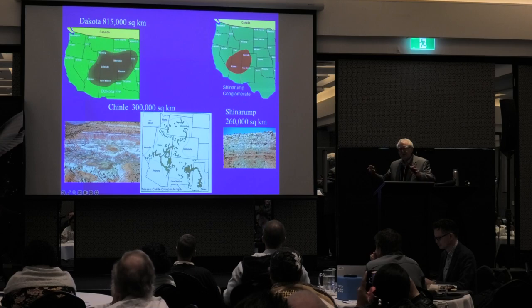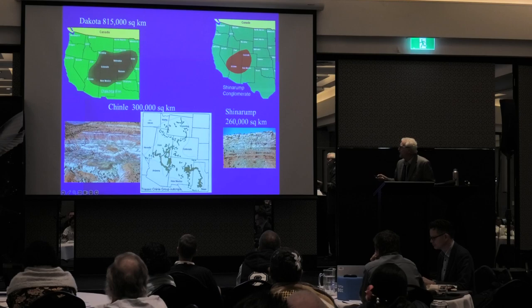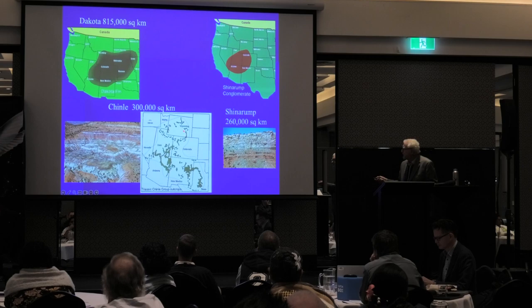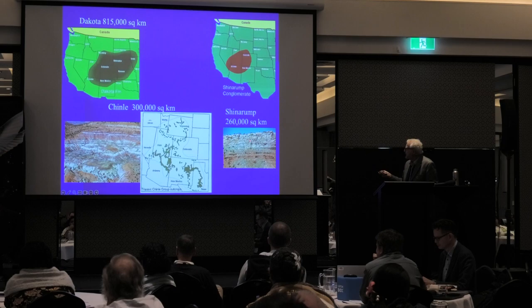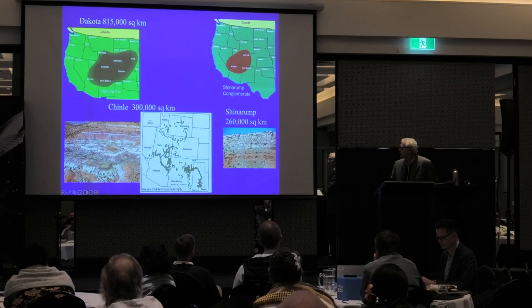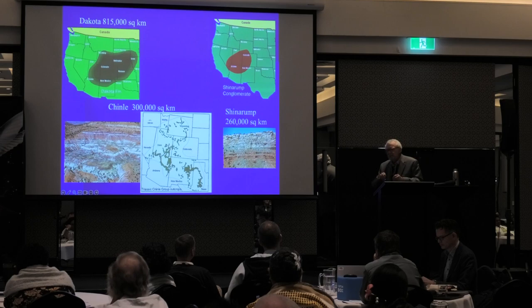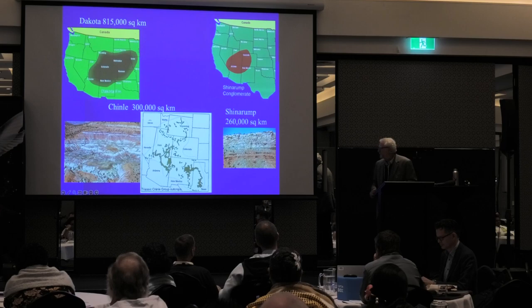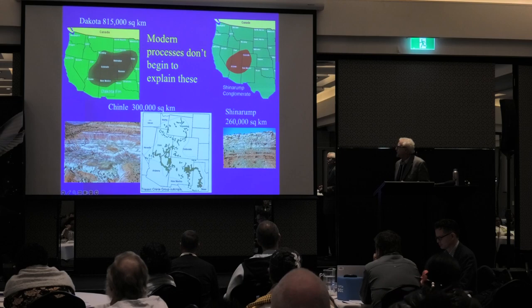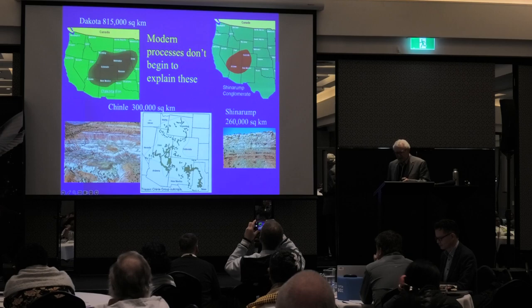Just above the Morrison we have the Dakota Sandstone — about a 50-foot-thick layer of coarse sandstone — covering 815,000 square kilometers. Down here in the southwestern United States we have the Chinle Formation, a colorful and very fascinating formation, covering 300,000 square kilometers. The bottom part of that is called the Shinarump Conglomerate — 260,000 square kilometers of round pebbles like you would find in a stream bed, yet it's interpreted as meandering streams. Well, where are the streams? Modern processes don't begin to explain these — not even a slight beginning. They can only be explained by continent-scale processes.